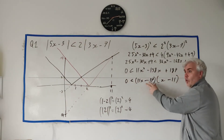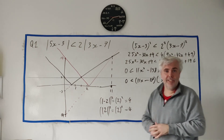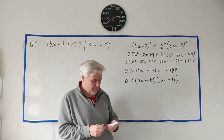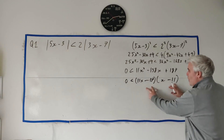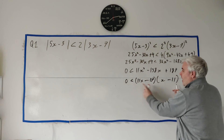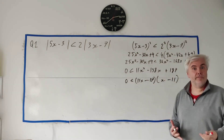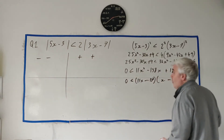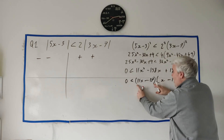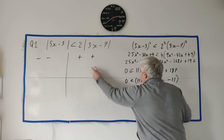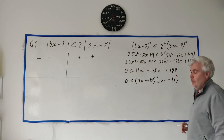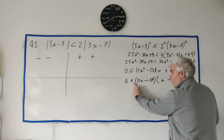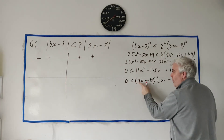Now these brackets are just numbers and their product must be greater than zero, meaning positive. There are two ways to get a positive product: both factors negative, or both factors positive. In the first case, 11x minus 17 less than 0 AND x minus 11 less than 0. In the second case, 11x minus 17 greater than 0 AND x minus 11 greater than 0. It's important that both conditions hold simultaneously.